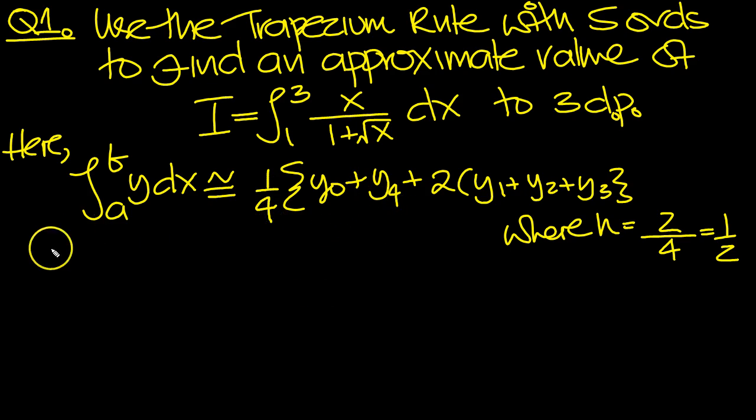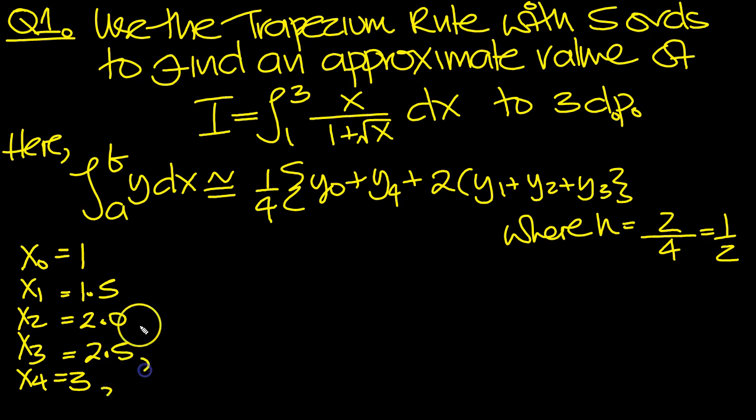Now we need to work out the ordinates, the y ordinates. So we need x0, x1, x2, x3, and x4. We start from 1. We finish at 3. We go up in distances of a half, don't we? So this is 1.5, 2.0, 2.5, and 3. So there's our x ordinates then.